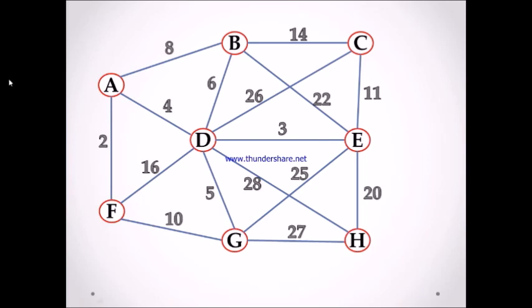Let's start with node A. A to B, we have 8. A to D, we have 4. A to F, we have 2. The minimum edge value is 2.